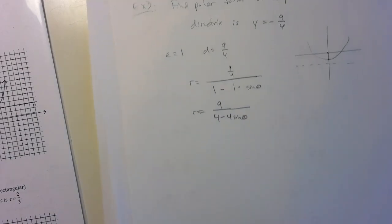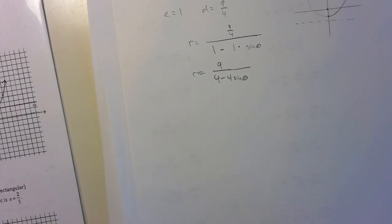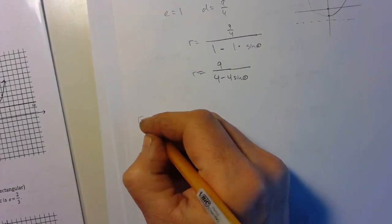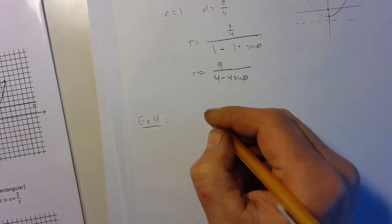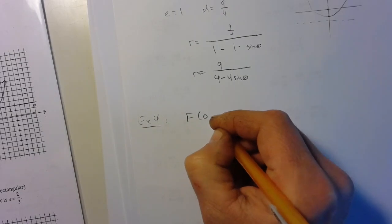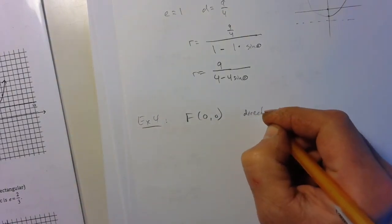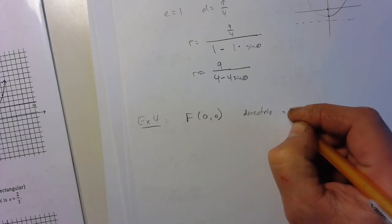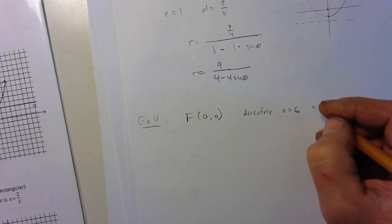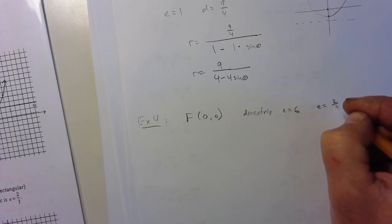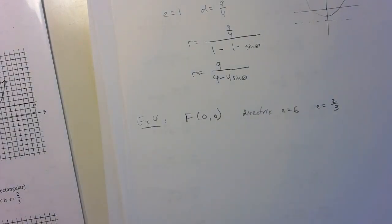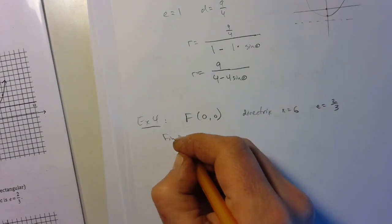If we had an example that was a different conic, and let's just say it didn't tell us what the conic was. So let's say that this conic had a focus of zero, zero, and it has a directrix. It says the eccentricity is two-thirds, okay? And let's just find the equation, find the polar equation.